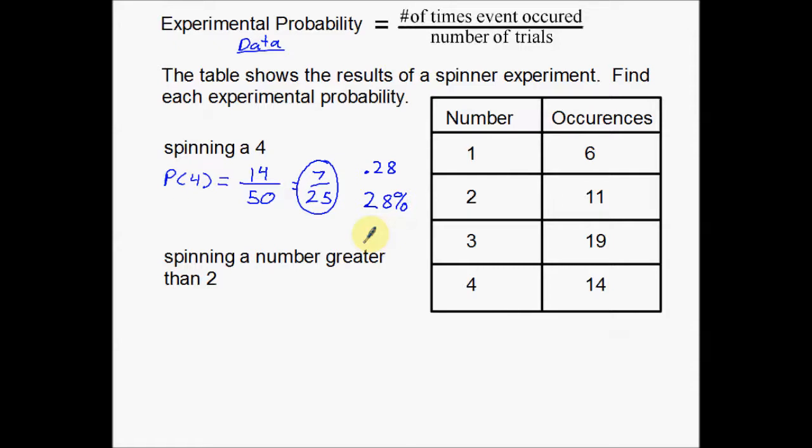Sometimes it depends on what the problem asks you to do. But at this level, if you're talking about experimental probability, you're probably pretty good at taking a fraction like this and making it into a decimal or a percent. All right, second example here,